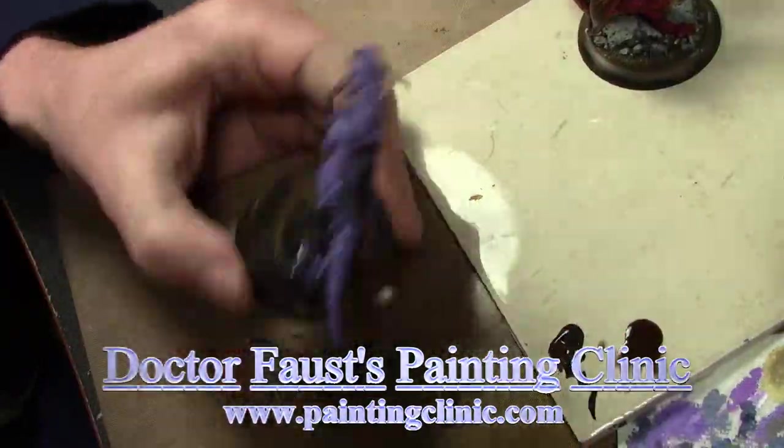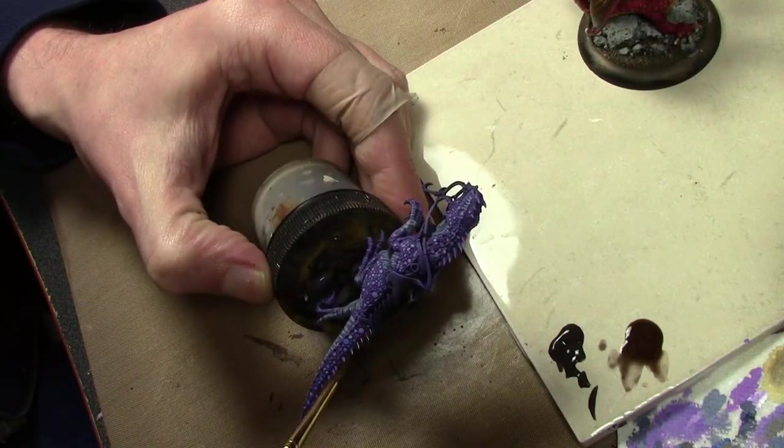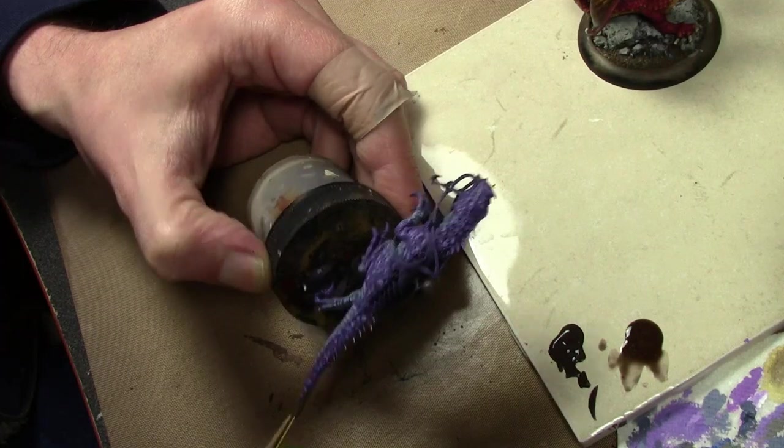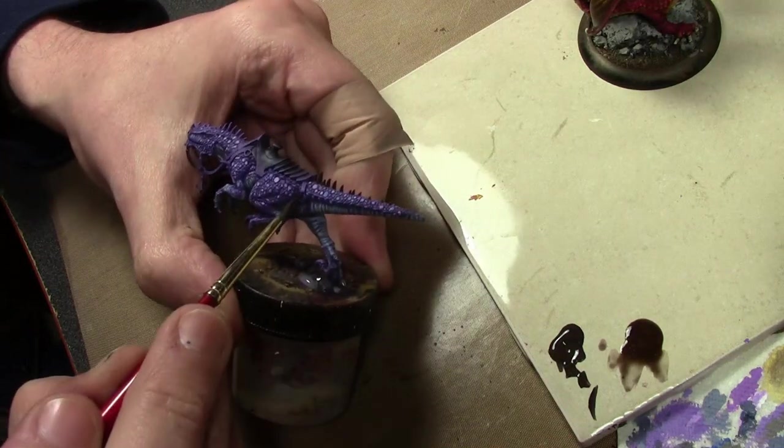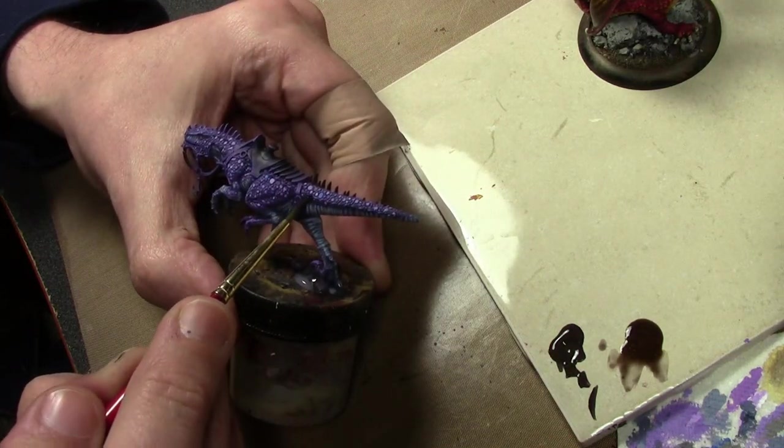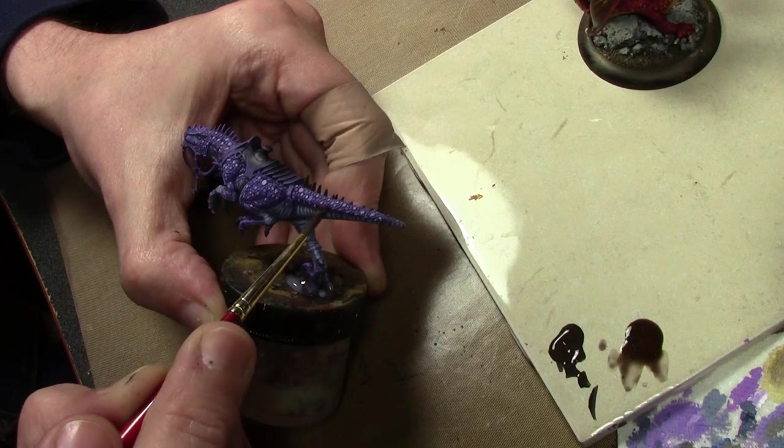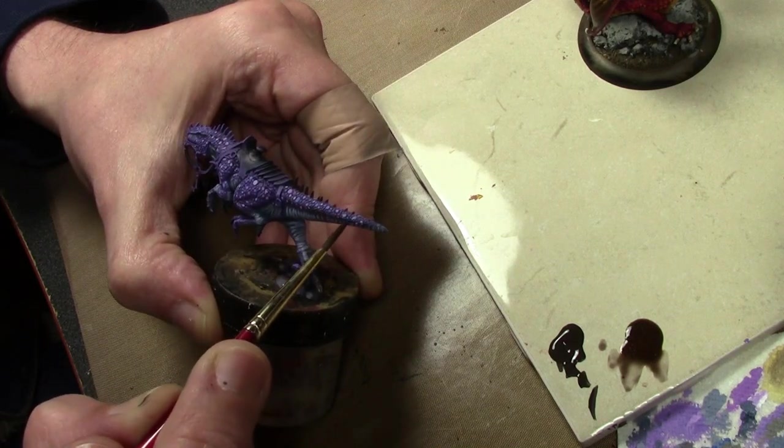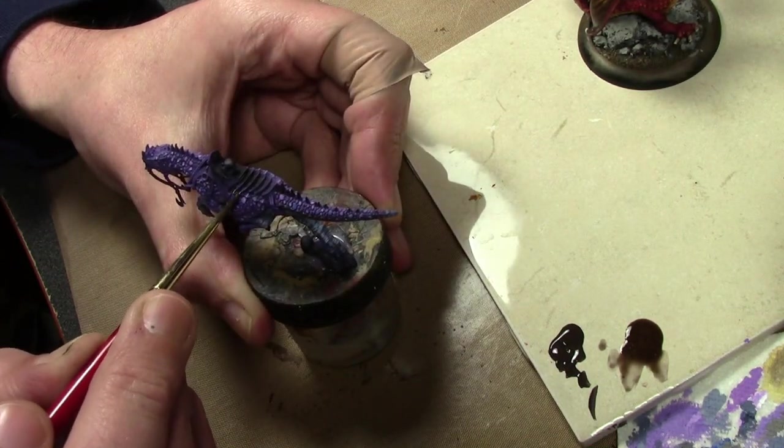Here we go painting up the Dark Elf Cold One chariots, starting with the cold ones themselves. We're skipping this part in the video because I already did a video on painting Cold One Knights, and I'm painting these cold ones the exact same way. Go back and check that video if you like. I'll include a link right about here, and then come back to this one and we'll move on to the next part of the chariot.